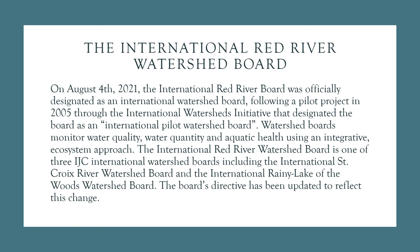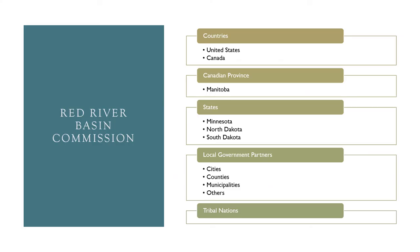While the IJC oversees all the rivers that cross the Canadian-US border, in 2021 the International Red River Watershed Board was established to focus on issues specifically related to the Red River. Outside of the formal treaty organization of the IJC, there is the Red River Basin Commission, which serves as the larger forum for most of the partners within the watershed to meet and discuss management issues.